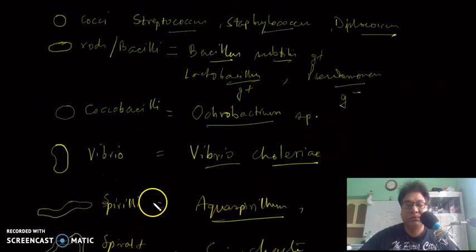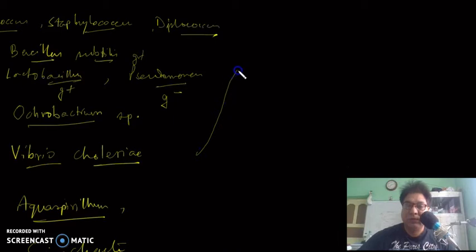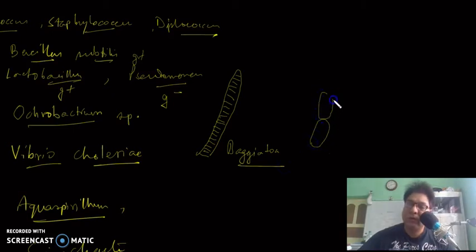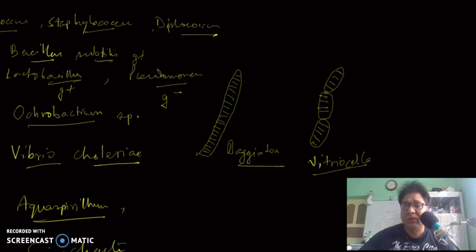There are also some other types of shapes seen in bacteria called cyanomorphic bacteria. These are quite similar to oscillatoria and cyanobacteria. An example is Beggiatoa. Another bacterium very similar to cyanobacteria is Vitreoscilla.